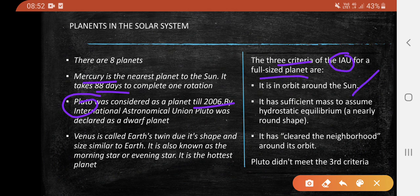Those are: it is in orbit around the sun; it has sufficient mass to assume hydrostatic equilibrium, meaning a nearly round shape; and it has cleared the neighborhood around its orbit. Pluto did not meet the third criteria, hence it was declared a dwarf planet.